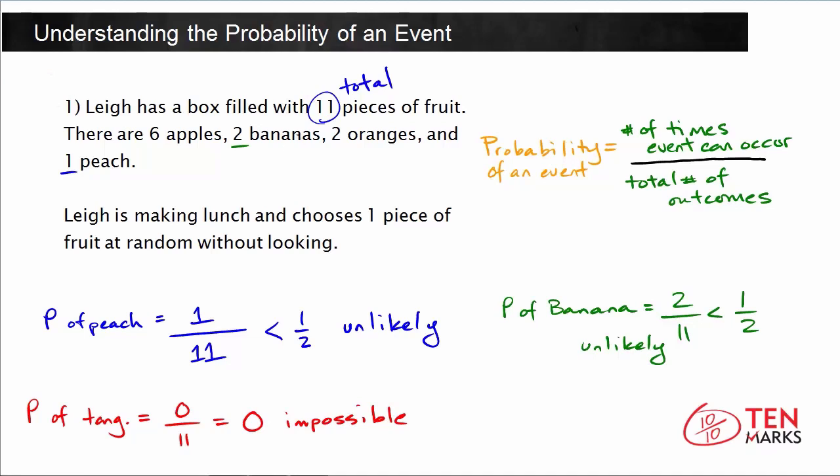And lastly, what's the probability of an apple? So P of apple. There are 6 apples, and the total number of outcomes is still 11. Six-elevenths is greater than one-half, so this is actually a likely outcome. When she reaches in, she's probably going to get an apple. Now let's try another problem together.